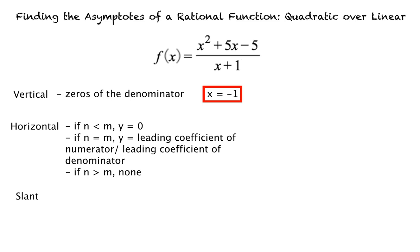Given these rules, what is the horizontal asymptote for this function? The degree of the numerator is 2, and the degree of the denominator is 1. Since the degree of the numerator is greater than the degree of the denominator, there is no horizontal asymptote. Good job!